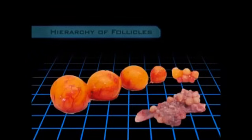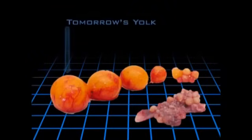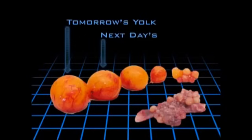The largest follicle on the ovary will release the yolk of the egg the hen will lay tomorrow, while the next largest will produce the next day's yolk, and the next largest will yield the next day's yolk, and so on.